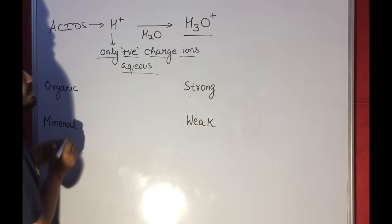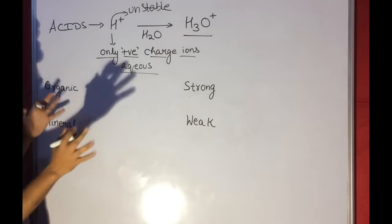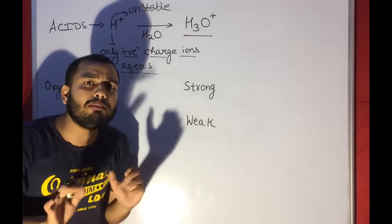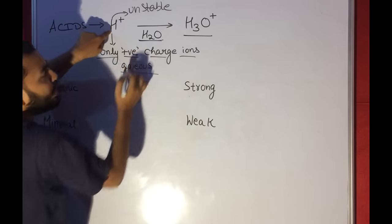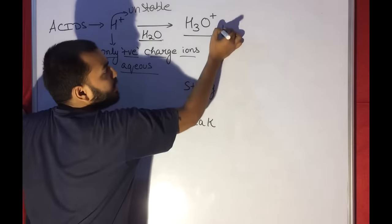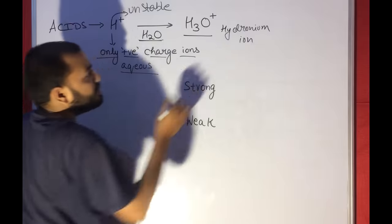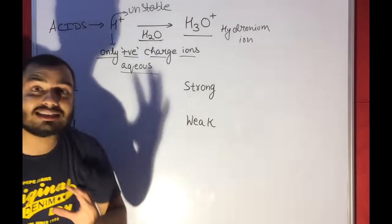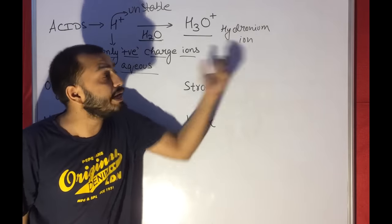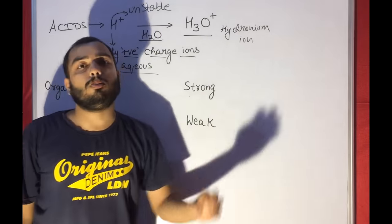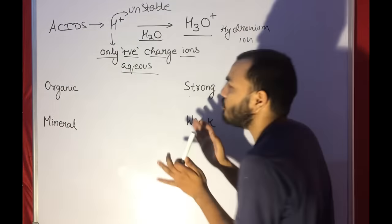This H+ ion is very unstable — it cannot remain in solution. So H+ combines with H2O and forms H3O+, which is also called hydronium ion. If I ask you whether acid gives H+ or H3O+, you should say acid gives hydronium ion, that is H3O+, because H+ is not stable.